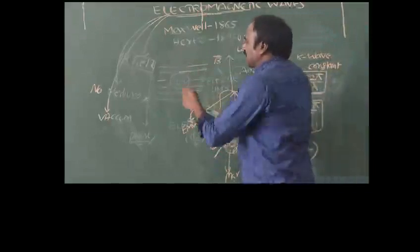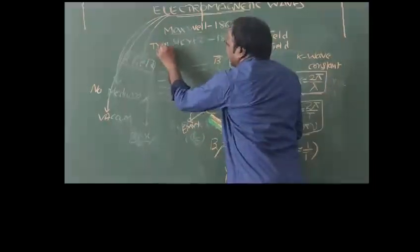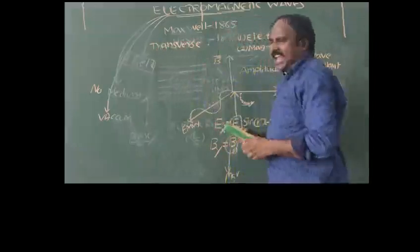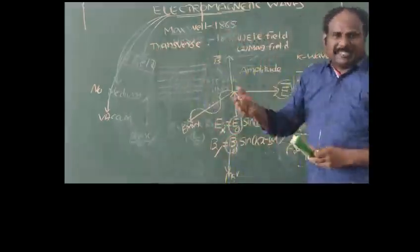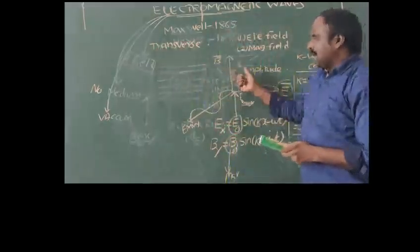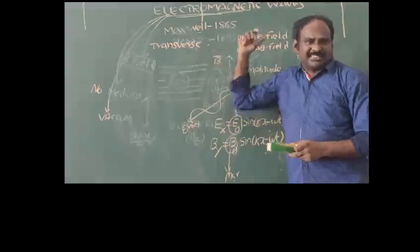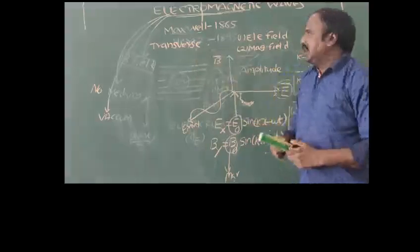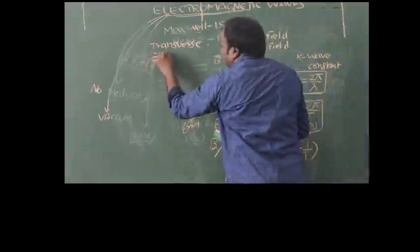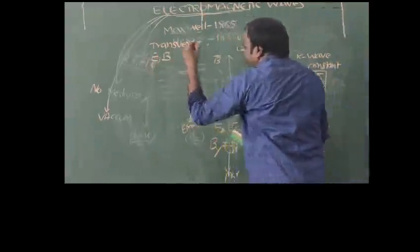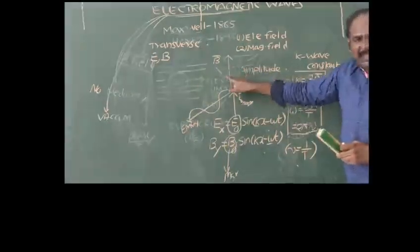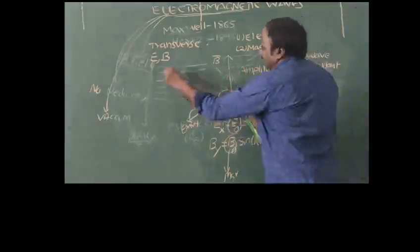Electromagnetic waves are always transverse in nature. If the electric field is along the x-axis and the magnetic field is along the y-axis, these electromagnetic waves require electric and magnetic fields which are perpendicular to each other and are in phase.